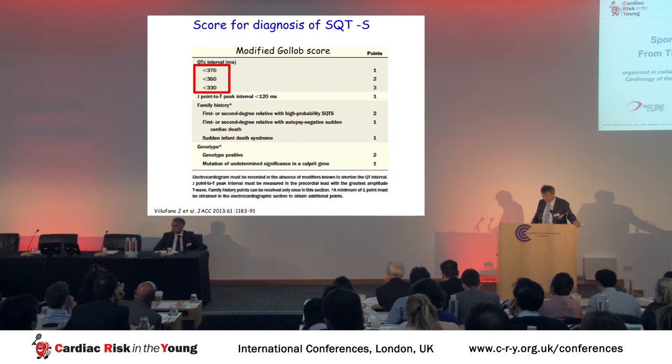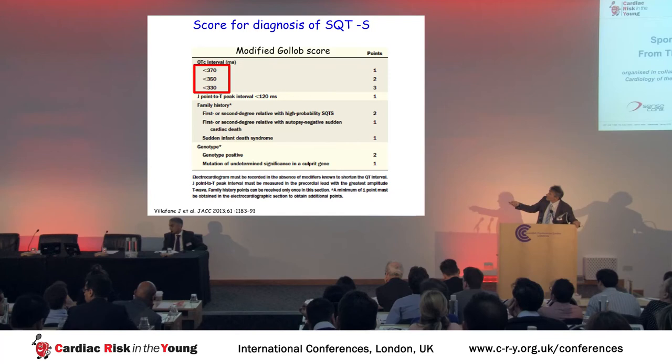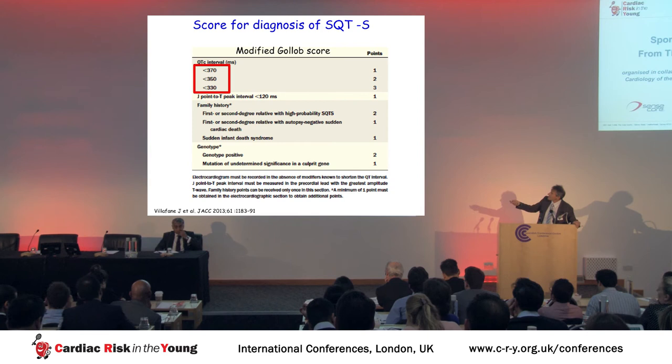For short QT syndrome, a scoring system originally proposed by Gollob has been recently modified. The lower boundary values for QT duration range from 330 to 370 milliseconds, and these values allow a risk assessment for short QT syndrome.